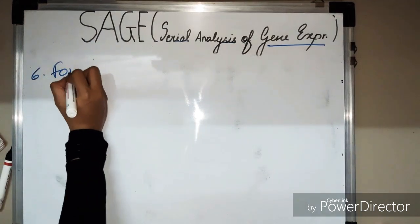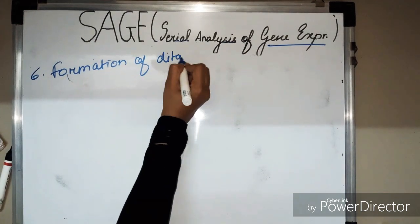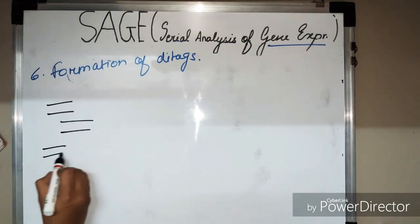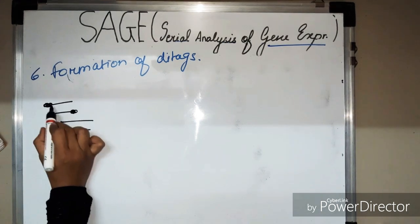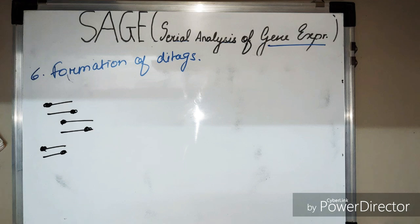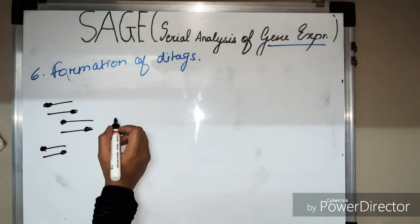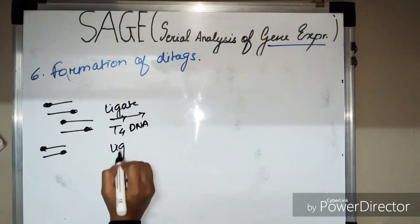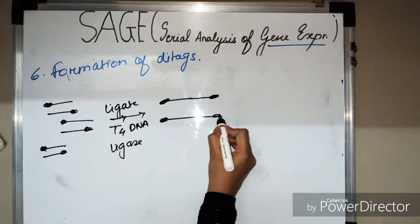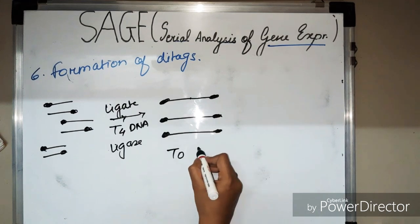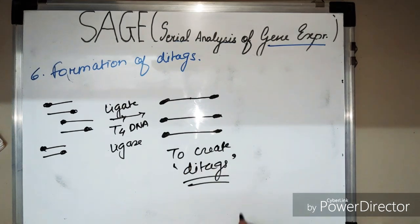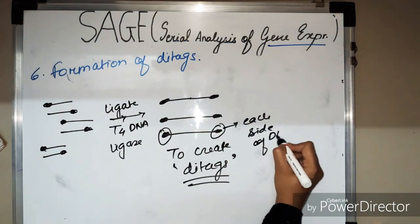After the blunt-ended tags are formed, in Step 6 we form di-tags. The two groups of cDNA are ligated together using T4 DNA ligase and di-tags are created, producing a linker–di-tag–linker construct.